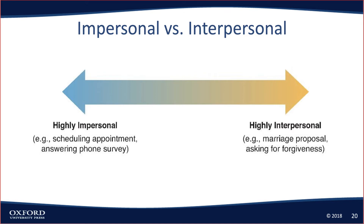Highly impersonal would be scheduling an appointment — you call the doctor's office and say, 'I need to come in for an eye exam.' It doesn't matter who answers the phone. A marriage proposal, on the other hand, would be highly interpersonal. I have a highly interpersonal relationship with my husband, but that doesn't mean every single one of our interactions is highly interpersonal. He gets home from work and I usually say, 'how was your day?' — it's kind of formulaic. Sometimes people with whom we have an interpersonal relationship, we actually have a more impersonal interaction.